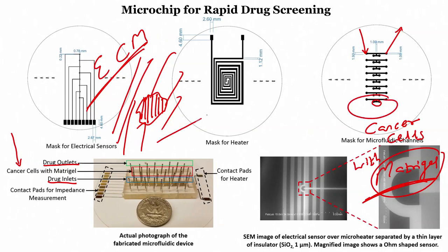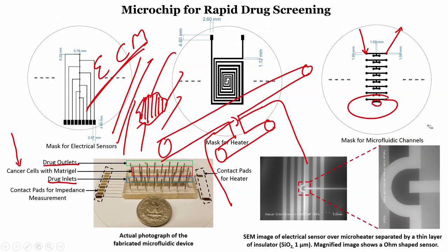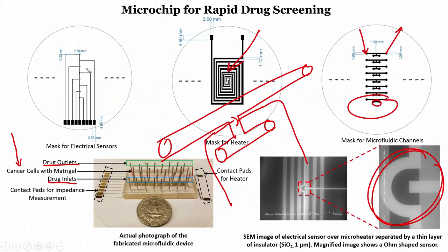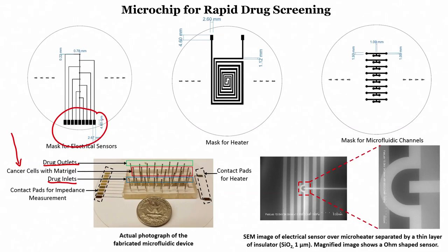If I enlarge the shorter channel, below this channel there are interdigitated electrodes. Below the interdigitated electrodes is an insulator, and below the insulator is the heater. So: first layer is the heater, second layer is the insulator, third layer is the interdigitated electrodes, and the fourth layer is the PDMS channels.